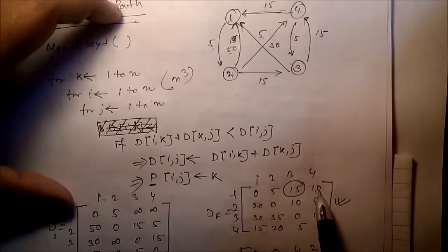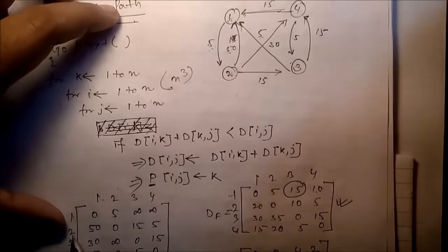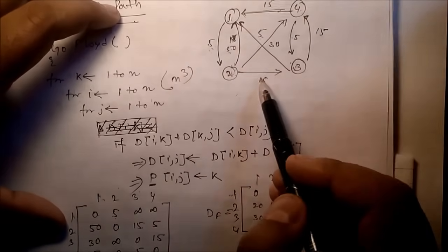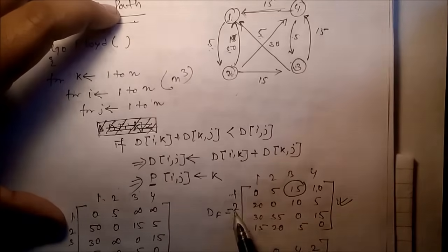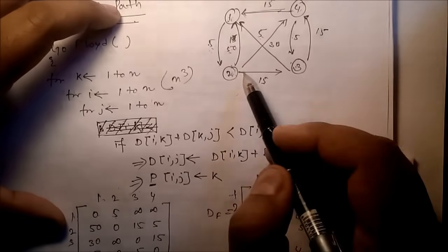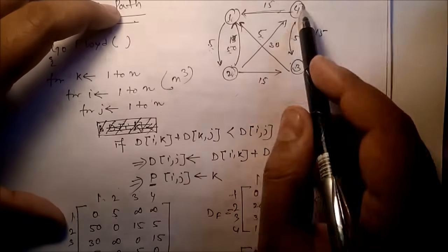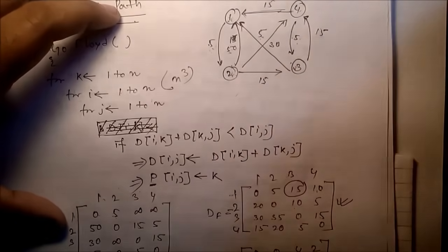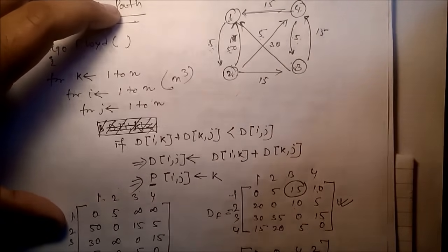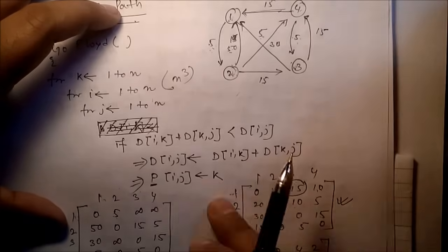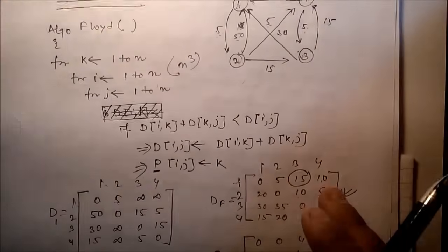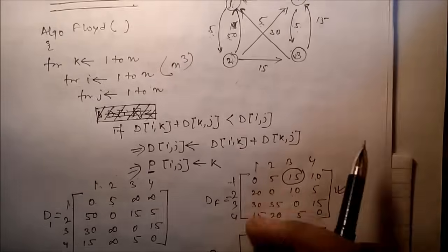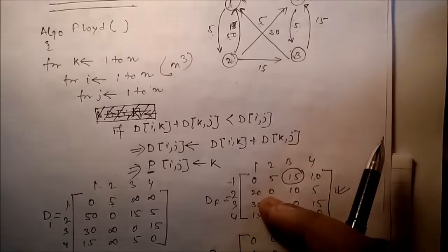Initially D[2][3] was 15, but the final result is D[2][3] = 10. That means we go 2→4 (cost 5) and then 4→3 (cost 5), giving 5+5 = 10. This final D table indicates the minimum distance between all pairs of nodes — it is the all-pairs shortest path. However, this table does not tell us the actual path or route taken.